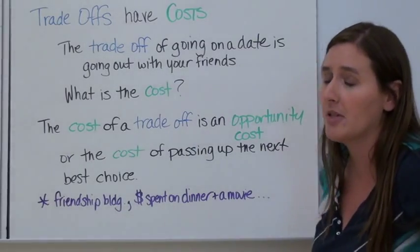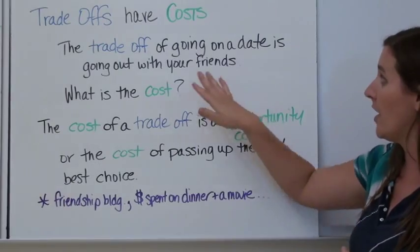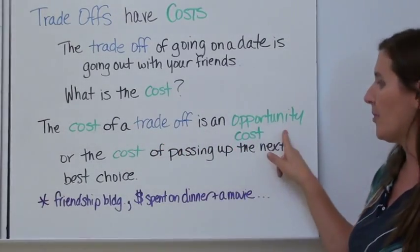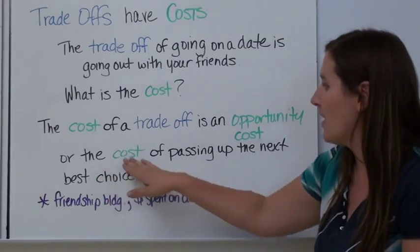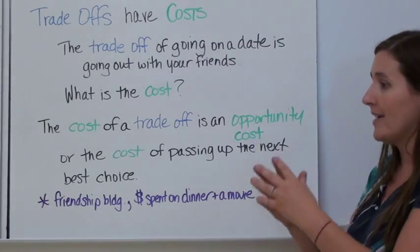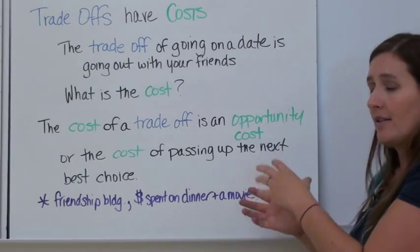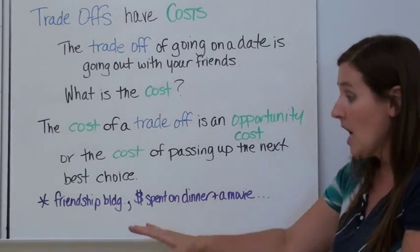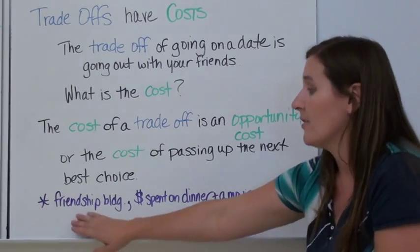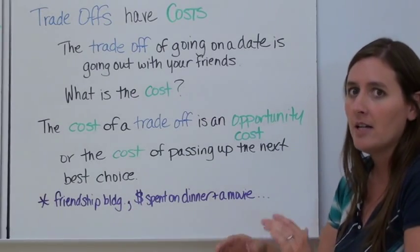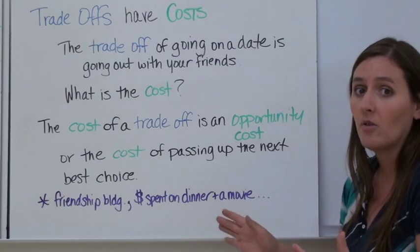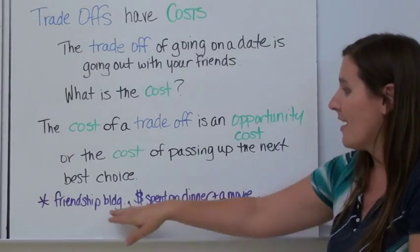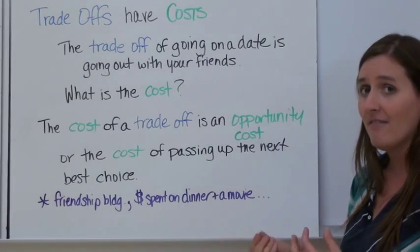All trade-offs have a cost. We figured out the trade-off of going on a date is going out with your friends. The cost of a trade-off is called an opportunity cost — the cost of passing up the next best choice. The trade-off is the actual thing you're giving up, and the opportunity cost is the cost or value of that thing. For example, if you gave up going out with your friends to go on a date, the value of going out with friends includes friendship-building time, excitement, fun, relaxation, and maybe money — because you'll probably spend more money on the date than you would with your friends. That's the value of what you gave up.